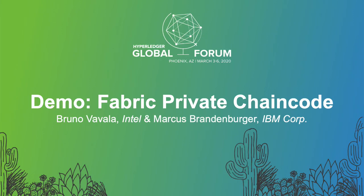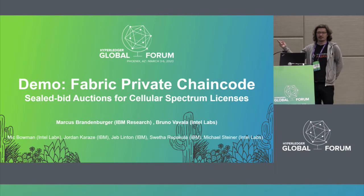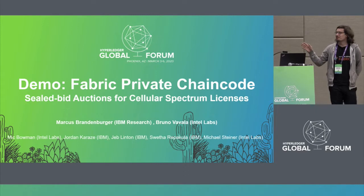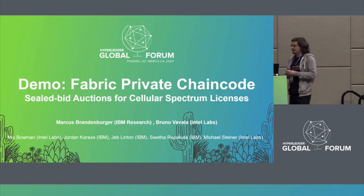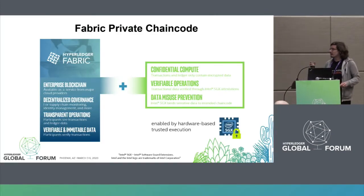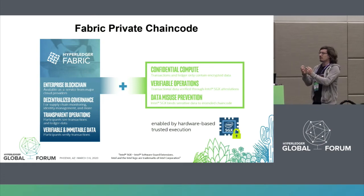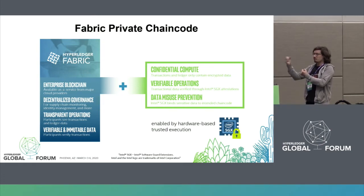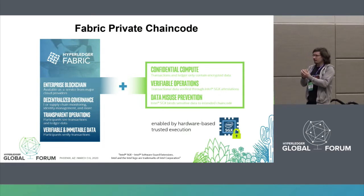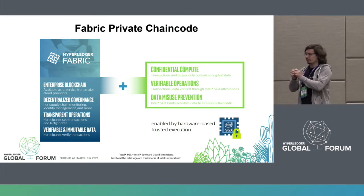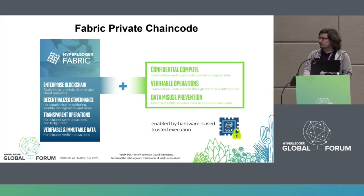Let's talk about the demo of Fabric Private Chaincode and see it in action. As you already learned, Fabric Private Chaincode basically takes Fabric and extends it with the capabilities we get from trusted execution environments. In particular, when we run our chaincode in a trusted execution environment, we get confidentiality, verifiability, and we can verify that everything was executed inside such a TEE using attestation.